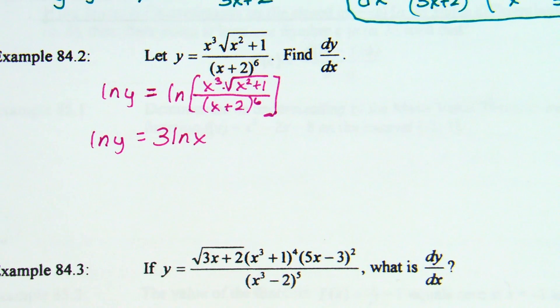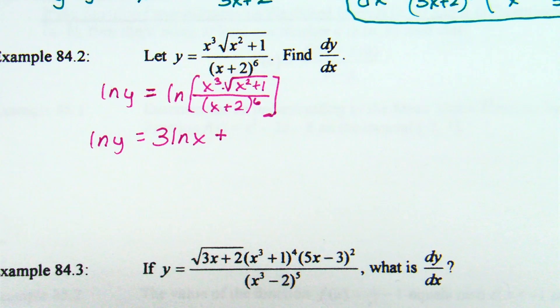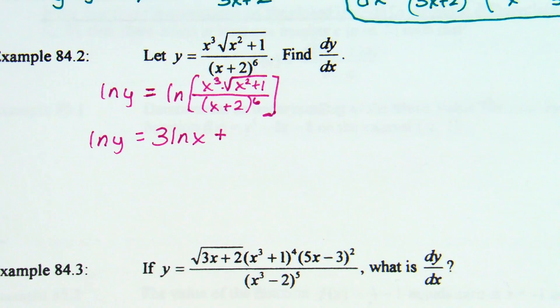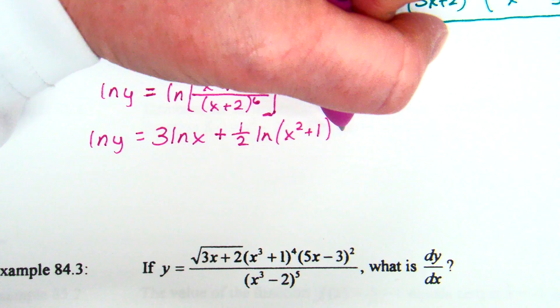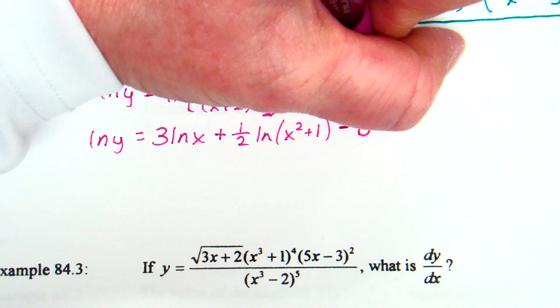Plus — the square root is a one-half power, so we have one-half times the natural log of (x² + 1). And then the denominator — we subtract that natural log, which has a power of 6, so we say minus 6 natural log of (x + 2). Now I'm ready to take the derivative of each term.